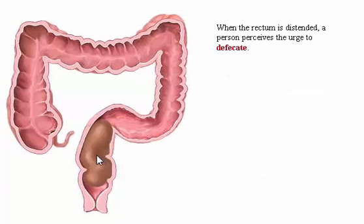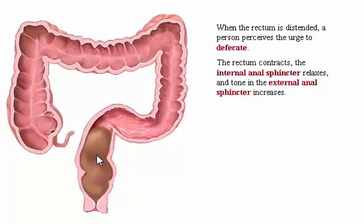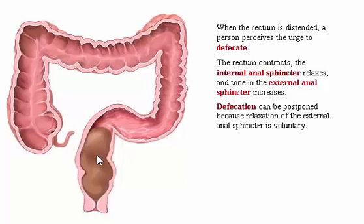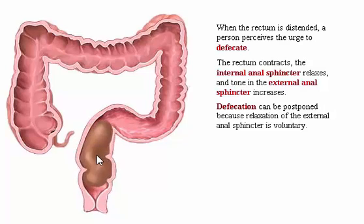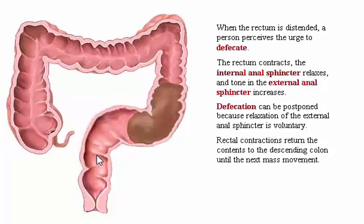When the rectum is distended, a person perceives the urge to defecate. The rectum contracts, the internal anal sphincter relaxes, and tone in the external anal sphincter increases. Defecation can be postponed because relaxation of the external anal sphincter is voluntary. The rectum accommodates, the internal anal sphincter constricts, and the urge to defecate dissipates. Rectal contractions return the contents to the descending colon until the next mass movement.